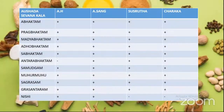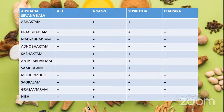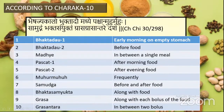Ashtanga Hridaya does not mention Antar Bhaktam, and also does not mention Nishi. Sushruta and Sharangadhara also do not mention Nishi. We will discuss each of these types according to various acharyas one by one in detail.